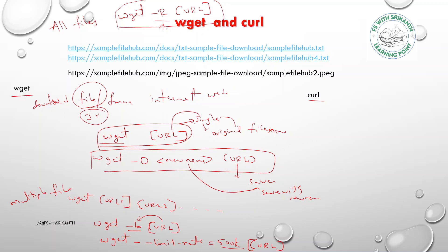Curl also does the same things. With curl and a URL, it downloads the files in a similar way. Here we use -o to rename: curl -o [new_name] [url]. What happens is curl downloads the file from the URL and saves it with the new name you specified.